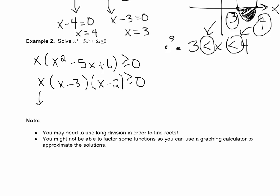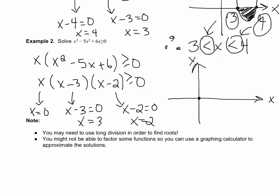That means we have a root at x = 0. We have another root at x - 3 = 0 or x = 3, and our third root x - 2 = 0 or x = 2. Doing a quick sketch then, roots are 0, 2, and 3.